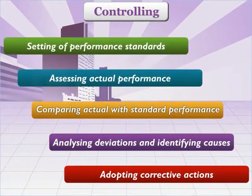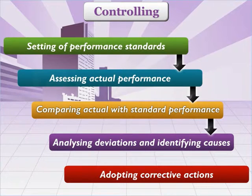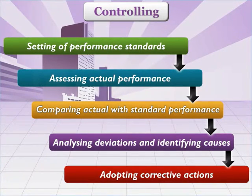Another important function of management is controlling. Here, the manager ensures that everything is going on as per plans. If some deviation is found, corrective actions are taken. Thus, in the function of controlling, actual performance of the organization is compared with the standard performance and deficiencies, if any, are identified and corrected.